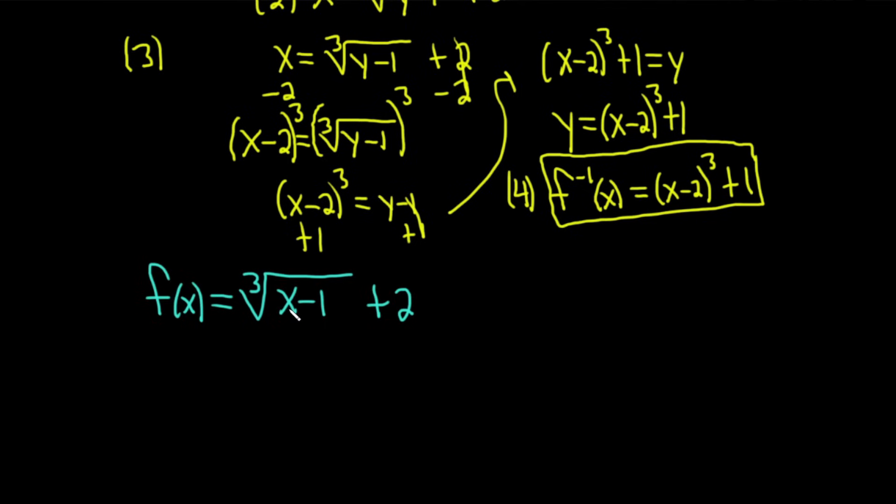So if you think about what f does, what does it do? Let's write down what it does. It takes x and it subtracts 1. So I'll put sub 1. That's the first thing it does. Then it takes the cube root. And then it adds 2. That's the order of operations, right? So it takes an x, it takes a real number x, subtracts 1, takes the cube root, and then adds 2.